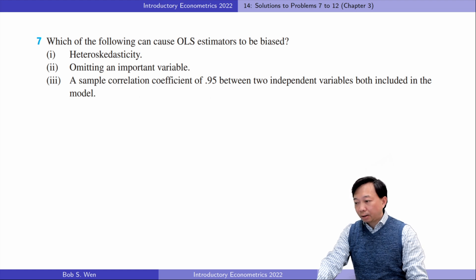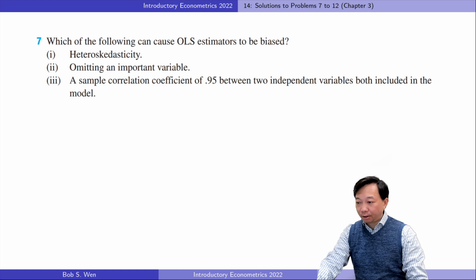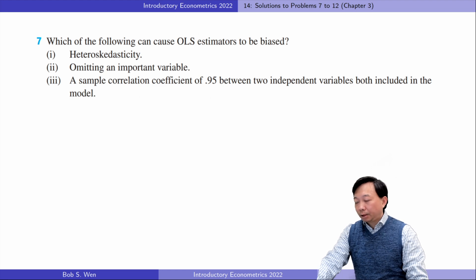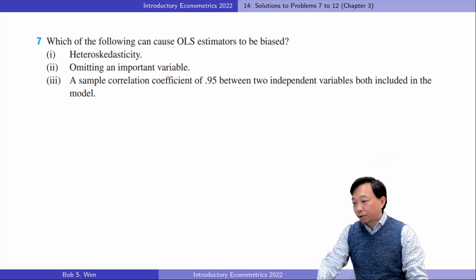Heteroscedasticity does not cause the OLS estimator to be biased; however, it no longer has the smallest variance among all linear unbiased estimators. In the presence of heteroscedasticity, there could be other linear unbiased estimators that are more efficient. In the case of omitting an important variable from the model, the OLS estimators are biased. Please check the video of Introductory Econometrics number 10, where we derived the omitted variable bias and determined the direction of the bias.